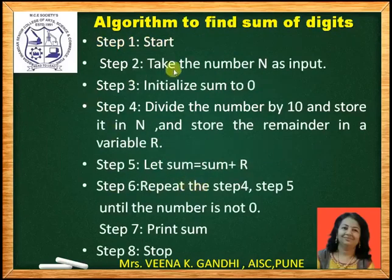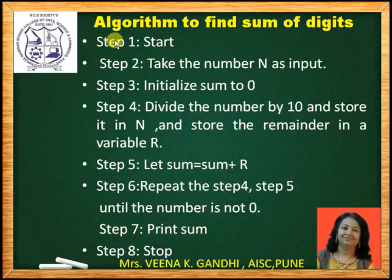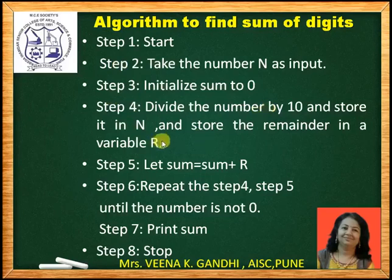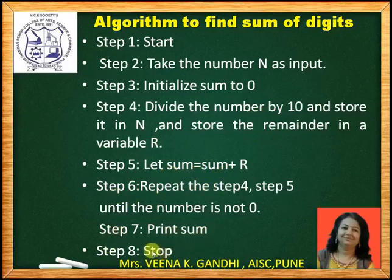Let us see another example — algorithm to find the sum of digits. Suppose the number is 125 and we want to find the sum of digits: 1 + 2 + 5 = 7. The logic is to divide the number by 10 and add its remainder to the sum, and repeat the process until the number becomes zero. Step one: start. Step two: read the number n as input. Step three: initialize sum = 0. Step four: divide n by 10, store the quotient back into n and the remainder in R. Step five: sum = sum + R. Step six: repeat steps four and five until n becomes zero. Step seven: print sum. Step eight: stop.